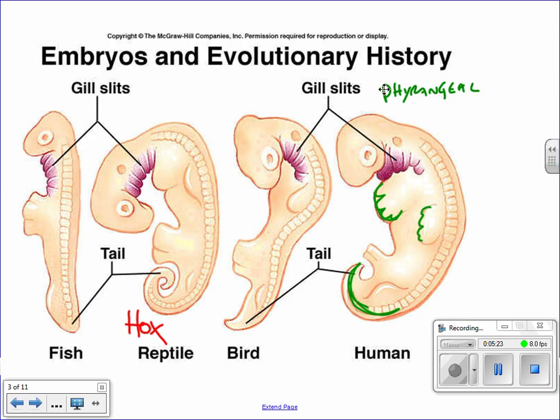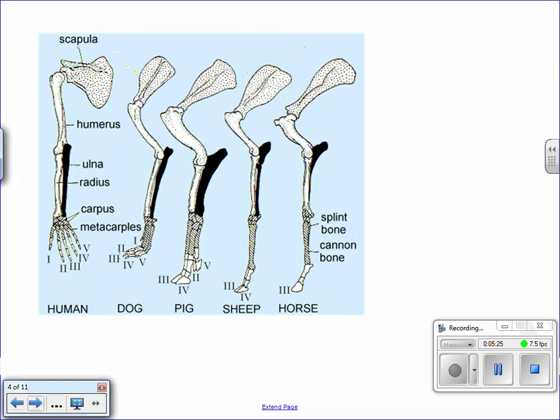Another one important for you is homologous structures or homologous features. Homologous structures are the idea that there's lots of different bones in the exact same order, but they have been modified because of environment and what becomes more beneficial for the organism at the current time. Here we're looking at human, dog, pig, sheep, and horse - all of them have the exact same bones in the exact same order.